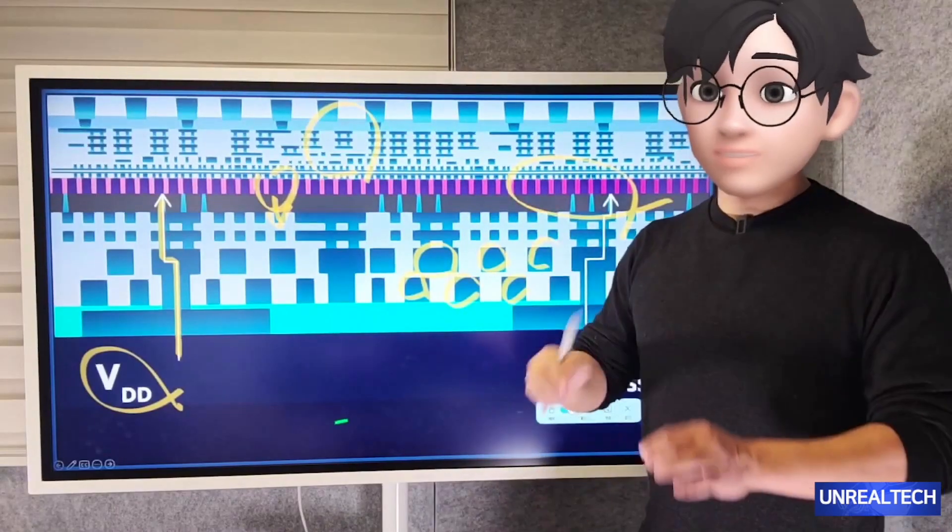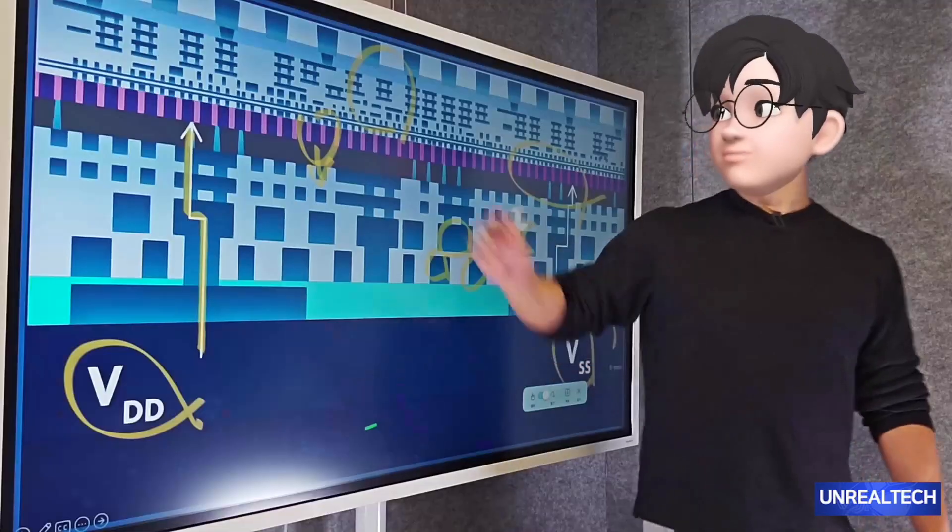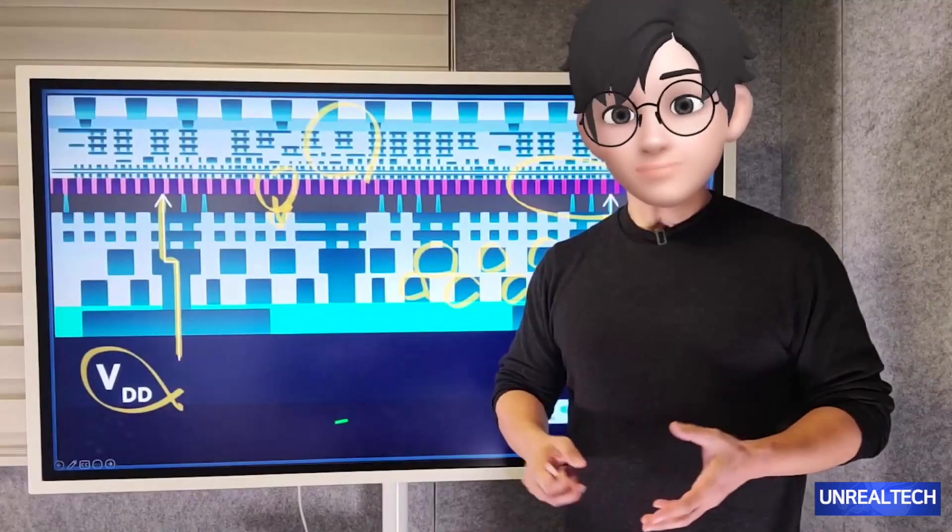Arranging them vertically improves heat dissipation and shortens distances. This creates more space and allows for denser packing. So why hasn't this been done before?